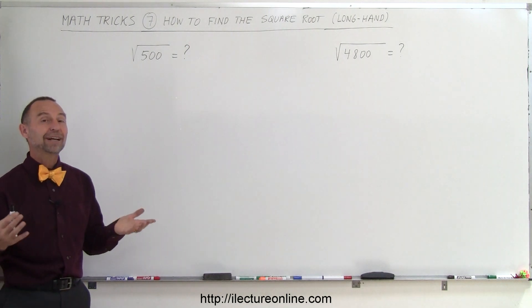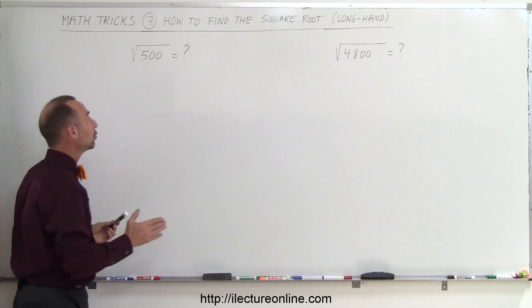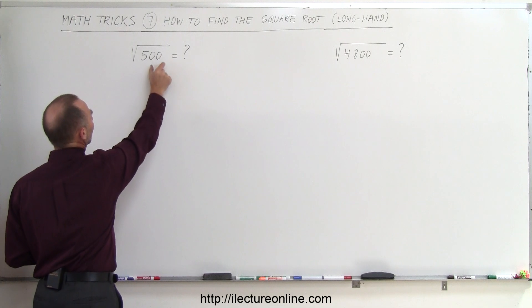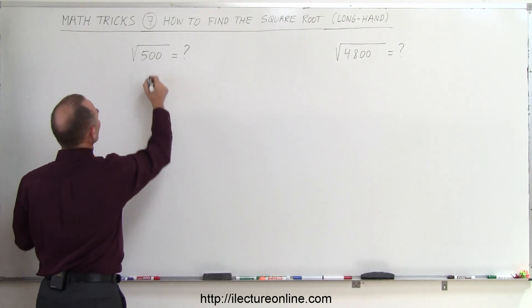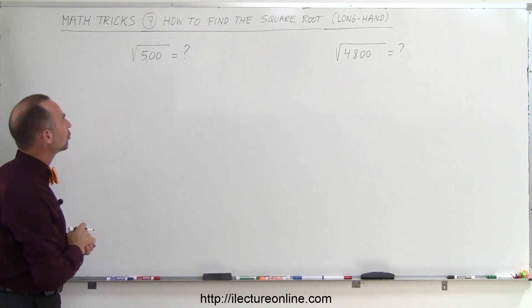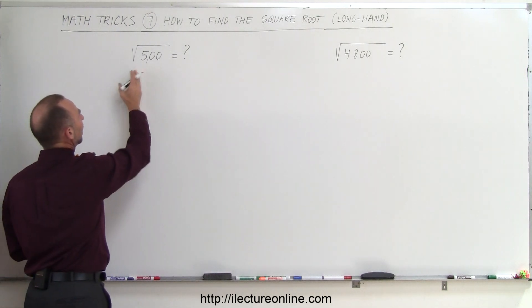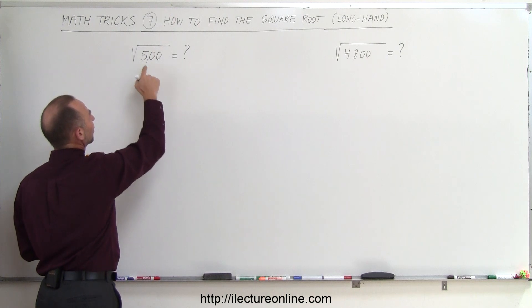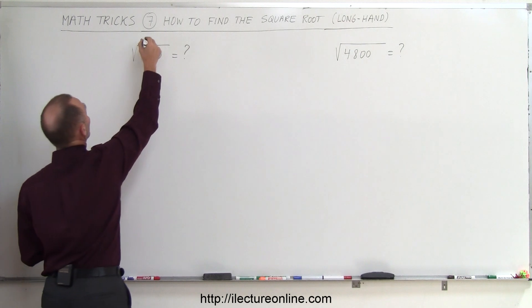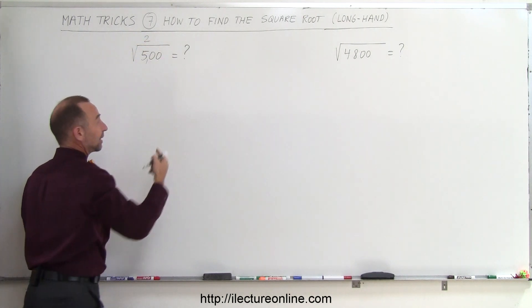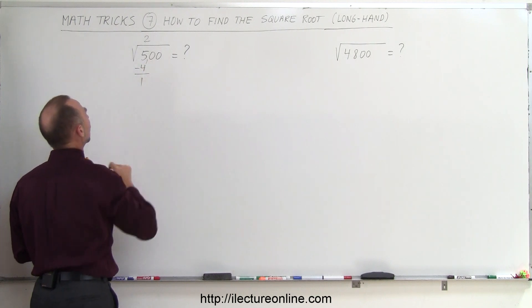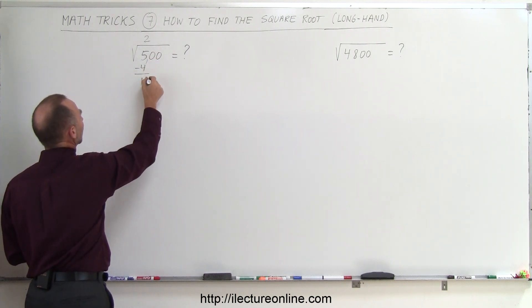You look at the number 500 and you're trying to find the square root. So what you want to do is you want to break the number up into sections of two numbers. So you have 0, 0, and 5. You want to separate that, so draw a little mark right there. Then I drop down the next two numbers.